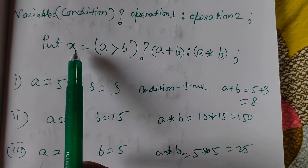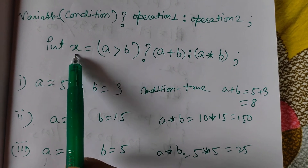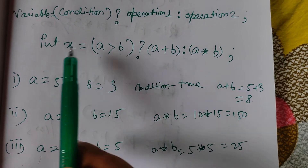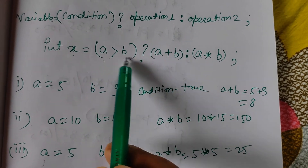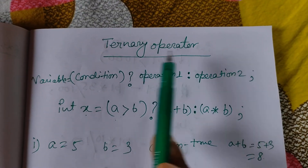In the ternary operator, we are using three operands: x, a, and b. Because it uses three operands, it is called the ternary operator.